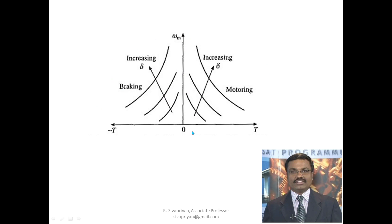This is the plot for chopper-controlled DC series motor — the y-axis is ωm and the x-axis is torque. This shows both motoring and braking characteristics. Whenever we keep increasing the duty cycle δ, the Va value increases and ωm also increases. The same behavior applies to regenerative braking. This plot is from the textbook 'Fundamentals of Electrical Drives' by G.K. Dubey.